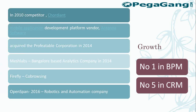Apart from organic growth, Pega has also grown through acquisitions — Coordiant, Antenna Software, and Chordiant. They acquired a company for Match Lab for analytics, Firefly for a co-browsing feature, and OpenSpan in April 2016 for robotics and automation, which aims to automate low-end jobs and is expected to be another game changer for them.